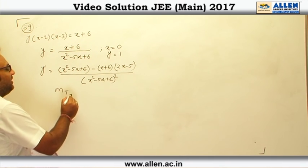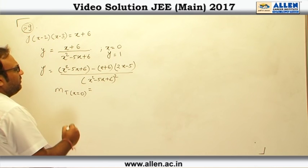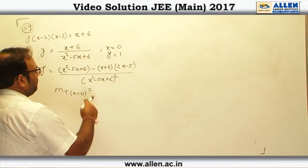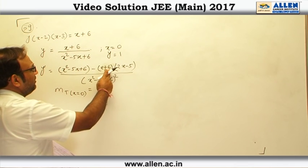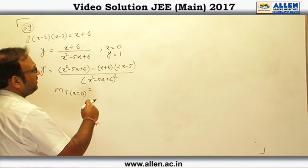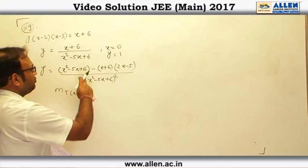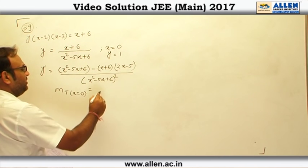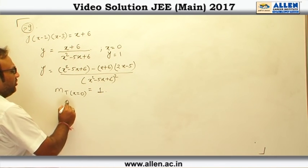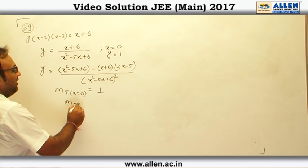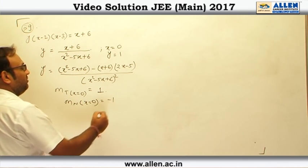The slope of the tangent at x equal to 0: we can see here we will be left with 6, and here we will be left with minus 30 plus 30, rather. So 36, and here also we are having 36. So it is going to give us 1. Therefore, the slope of the normal at x equal to 0 is obviously minus 1.